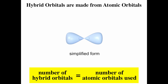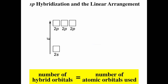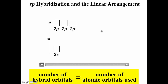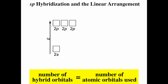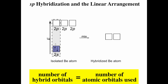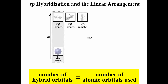SP hybridization leads to two SP hybrid orbitals. Their energy is an average of the S and P orbital energies. We can look at this using box diagrams. SP hybridization means we take an S and a P, form two SP hybrid orbitals, and are left with two unhybridized P orbitals. Consider the central beryllium atom in BeCl2. The isolated Be atom has a filled 2S orbital and three empty 2P orbitals. In hybridization, the 2S and one 2P mix to form two SP hybrid orbitals. The two electrons from the 2S become distributed one each into the SP orbitals with parallel spin, while the other two 2P orbitals remain empty and unhybridized.